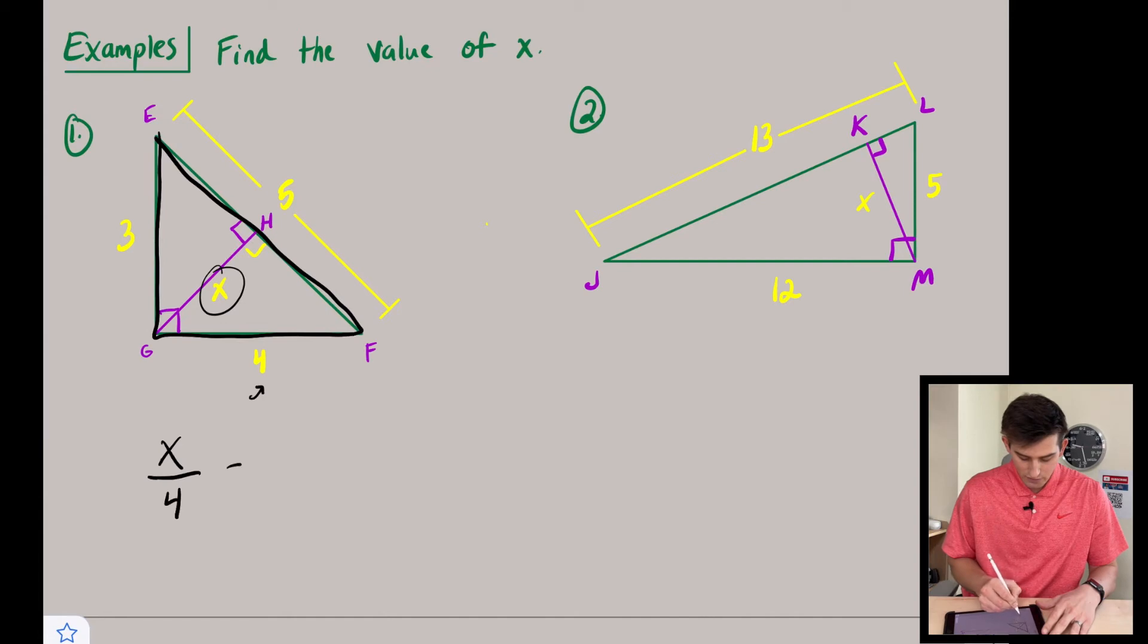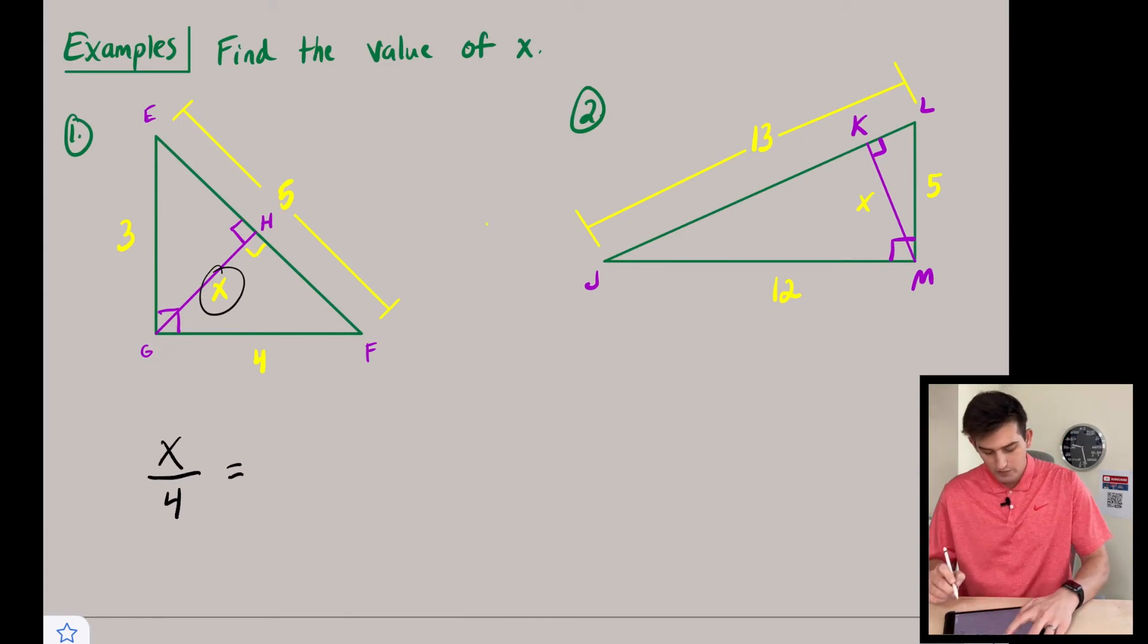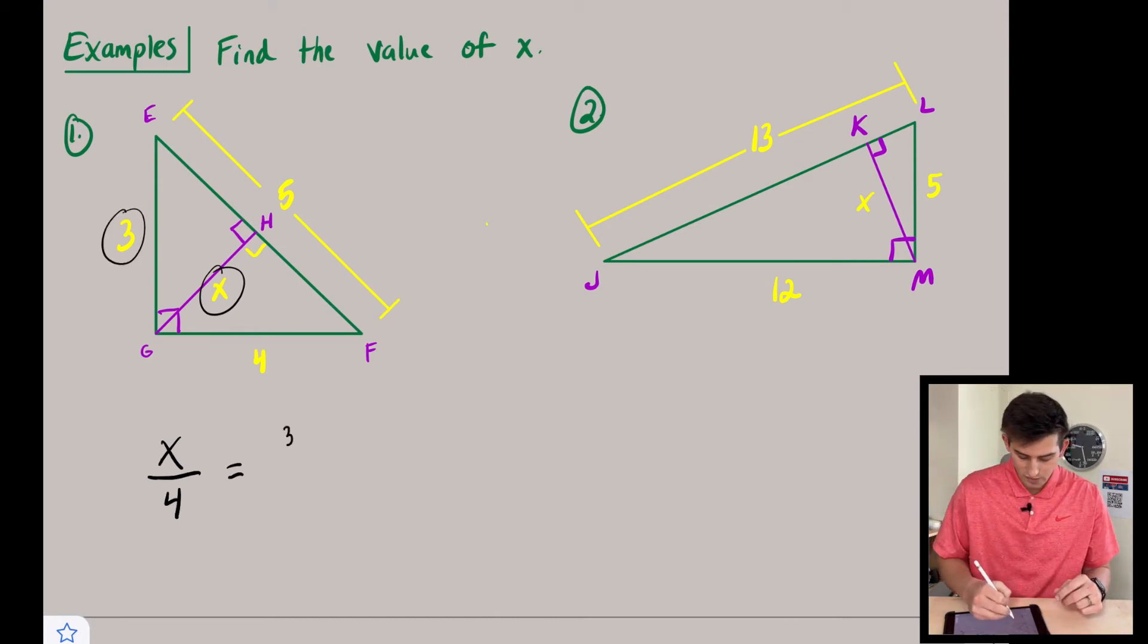So I'm going to say x over four is equal to, and now I'm going to look at two other measurements that we have for these two triangles. So now when we write our second ratio, we want our top number to come from the smaller triangle. So I'm going to use three here because three is the hypotenuse of this smaller triangle EHG.